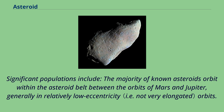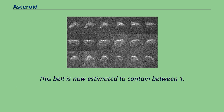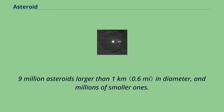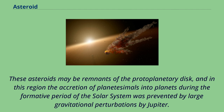The majority of known asteroids orbit within the asteroid belt between the orbits of Mars and Jupiter, generally in relatively low eccentricity orbits. This belt is now estimated to contain between 1.1 and 1.9 million asteroids larger than 1 kilometer in diameter, and millions of smaller ones. These asteroids may be remnants of the protoplanetary disk, and in this region the accretion of planetesimals into planets during the formative period of the solar system was prevented by large gravitational perturbations by Jupiter.